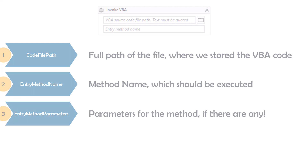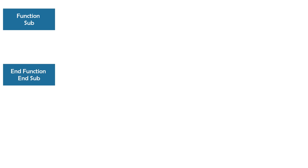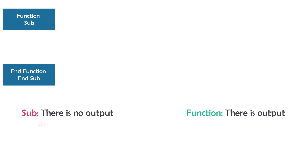Before I start with examples in UiPath, let's see how a VBA code looks and what are the parts of a VBA code. We always have at the beginning Function or Sub, and at the end End Function or End Sub. The difference between Function and Sub is: we use Sub if we don't have an output from the code, and we use Function if we want to get an output from the code.